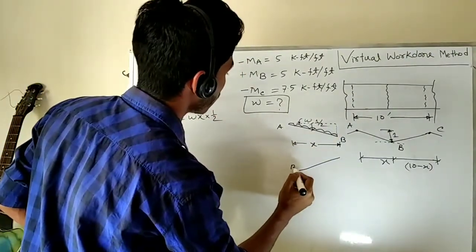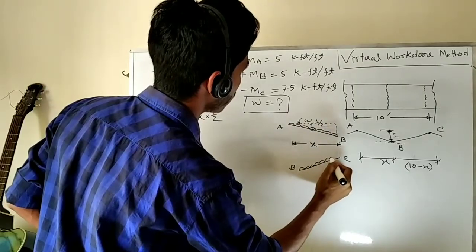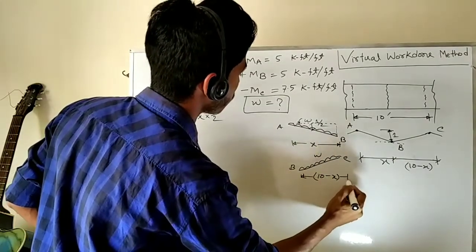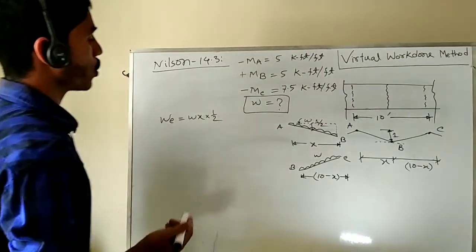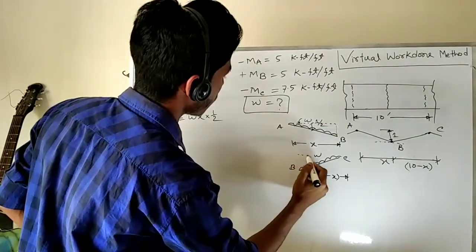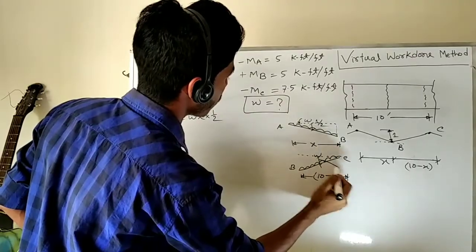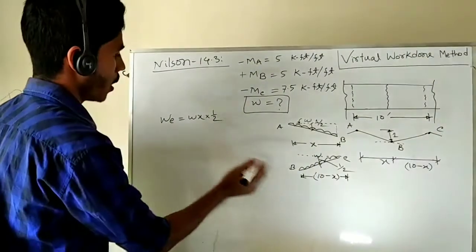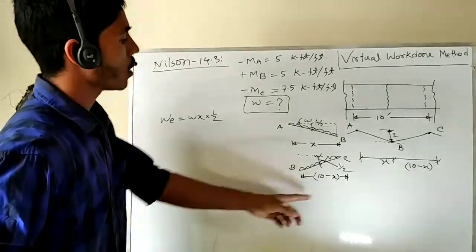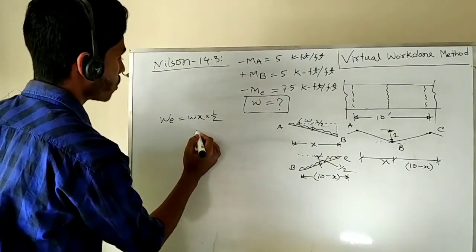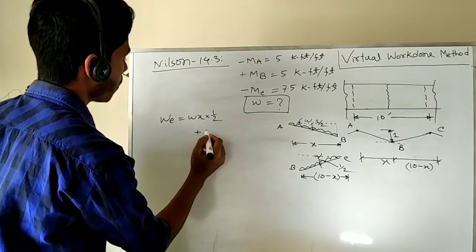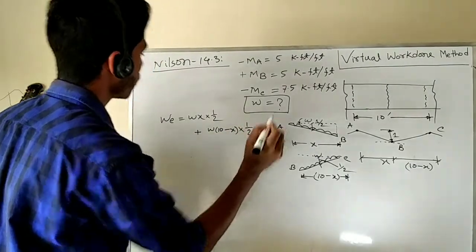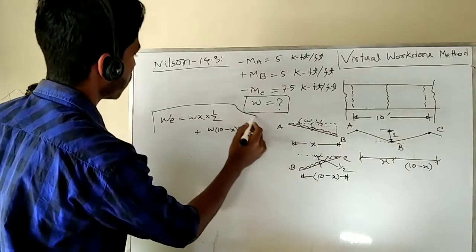For the BC portion, there is also a uniformly distributed load w over a distance of 10 minus x. The deflection at the center of the load for this portion is also one-half. Therefore, the external work done for the BC portion is the total load w(10 − x) multiplied by one-half, giving w(10 − x)/2.